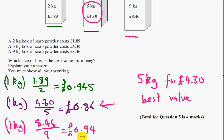And that's it for question 5. Question 5 is worth 4 marks. And the first mark is a method mark for working out 1kg of at least 2 of the boxes. So 1 mark here. If you've worked out all 3, then you get a second method mark.